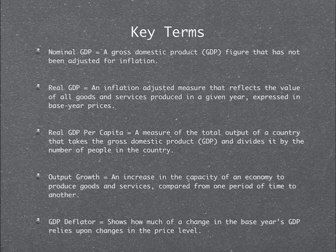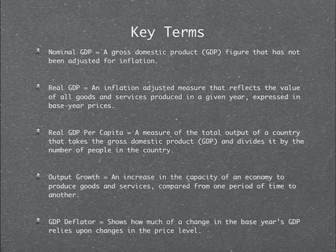Real GDP is an inflation-adjusted measure that reflects the value of all goods and services produced in a given year, expressed in base year prices. Real GDP per capita is a measure of the total output of a country that takes the gross domestic product and divides it by the number of people in the country.